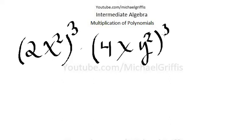So we have 2x squared raised to the third power times 4x times y squared raised to the third power. I'll eventually get it out. So what I'm going to do on the first one here on the left is we're going to break that up. So we have 2 to the third power times x squared. You're going to multiply both those exponents, gives you x to the 6.